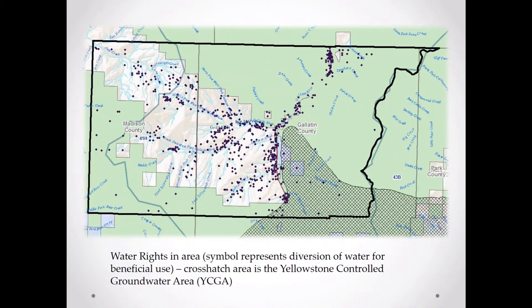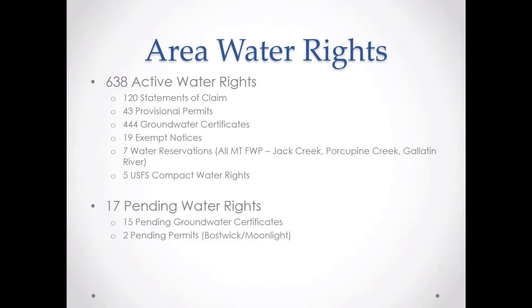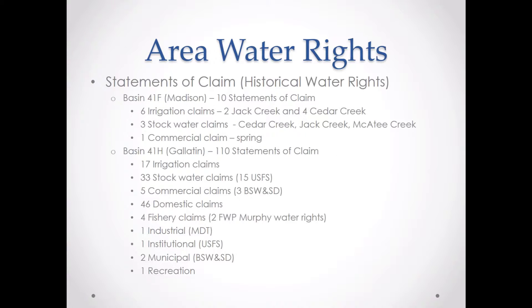Here's a map showing water right density — the water right diversion points — and a better representation of the location of the Yellowstone Control Groundwater Area, which is on the other side of the river. To talk about the area's water rights: there are 638 active water rights in the area. A quick breakdown: 120 statements of claim (historical water rights), 43 permits, 444 groundwater certificates (also called exempt 12s), 19 exempt notices, water reservations, the US Forest Service Compact right, and some pending water rights.